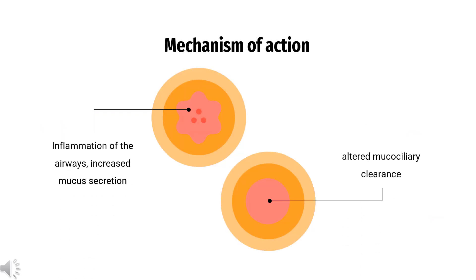Mechanism of Action. Inflammation of the airways, increased mucus secretion, and altered mucociliary clearance are the hallmarks of various diseases of the respiratory tract. Mucus clearance is necessary for lung health. Bromexine aids in mucus clearance by reducing the viscosity of mucus and activating the epithelium, allowing secretions to be expelled from the respiratory tract.